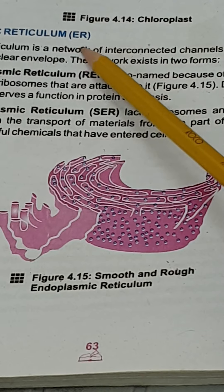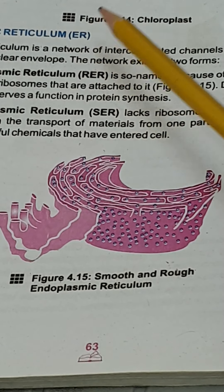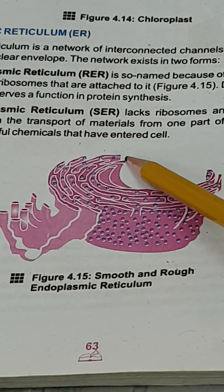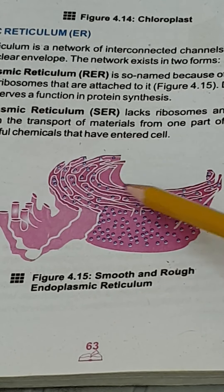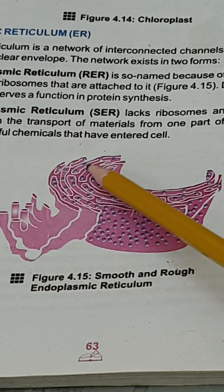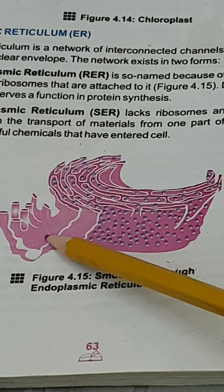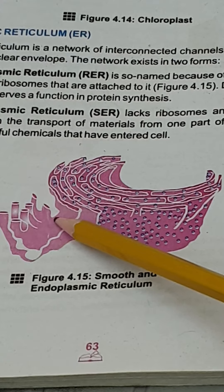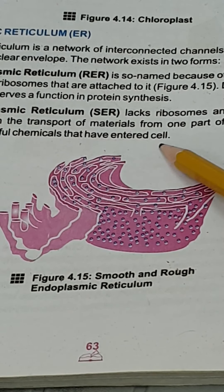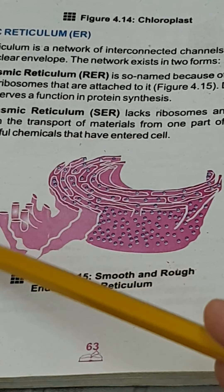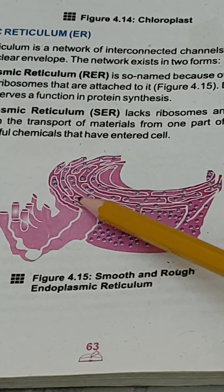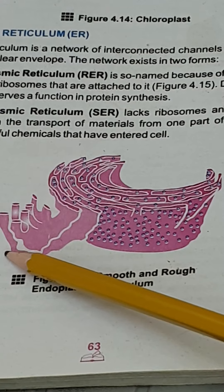The endoplasmic reticulum is a structure made up of interconnected channels and tubes. These interconnected channels are known as the endoplasmic reticulum. The endoplasmic reticulum attaches at one side with the nucleus and nuclear membrane, and the other side with the cell membrane.